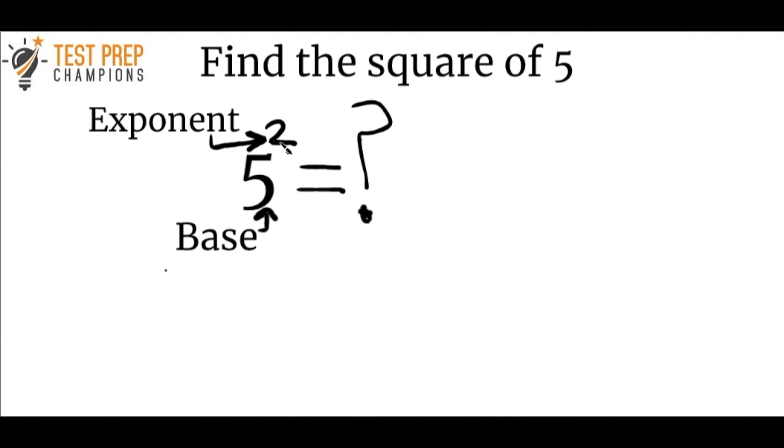And that exponent tells you how many times the number 5 is going to appear in multiplication. So since it's a 2 we know that 5 is going to appear in the multiplication 2 times. So 5 squared is equal to 5 times 5. Now a common mistake would be to think that 5 squared is equal to 5 times 2, and that's incorrect.